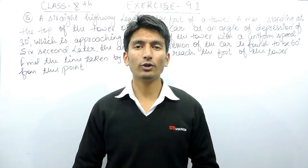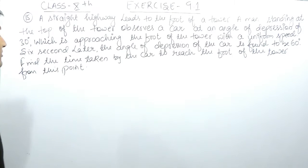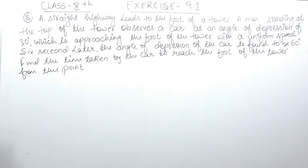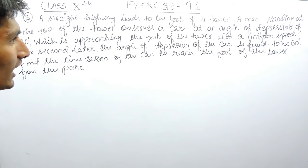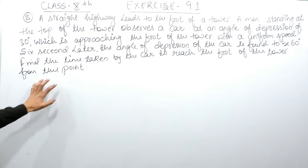Hello everyone, we are from True Maths and in this video we are going to solve question number 15 of exercise 9.1. The question says: a straight highway leads to the foot of a tower. A man standing at the top of the tower observes a car at an angle of depression of 30 degrees, which is approaching the foot of the tower with a uniform speed. Six seconds later, the angle of depression of the car is found to be 60 degrees. You have to find the time taken by the car to reach the foot of the tower from this point.